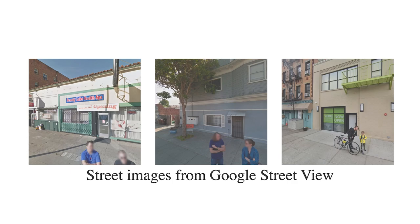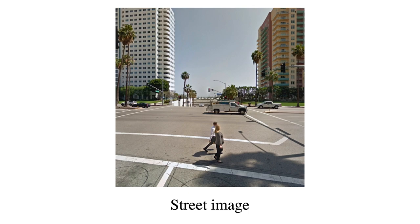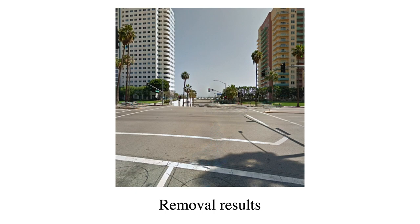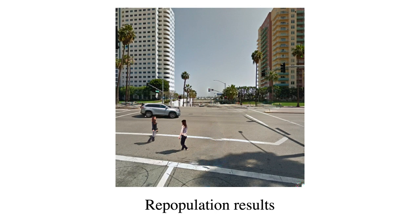We propose a learning-based framework to mitigate these limitations. Given a single street image, our framework first removes existing objects along with their shadows. We then repopulate the scene with new objects. Our framework can automatically select objects that match the lighting of the scene and compose them into the scene with proper scale, occlusion, and cast shadows consistent with the scene's geometry and lighting.